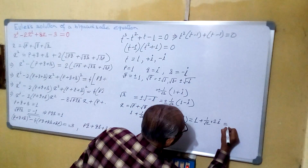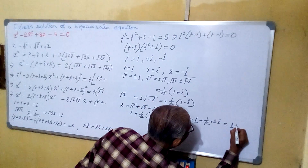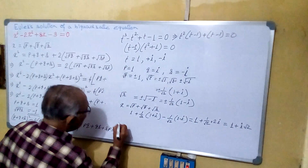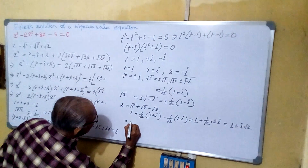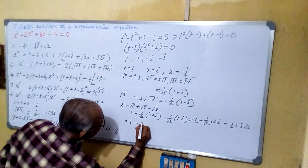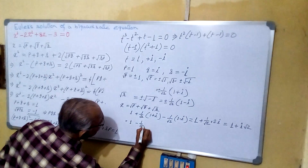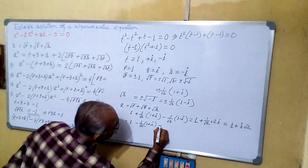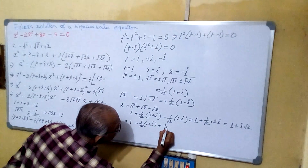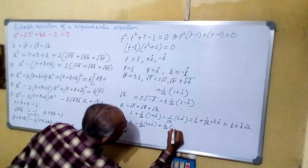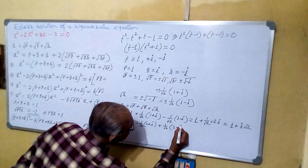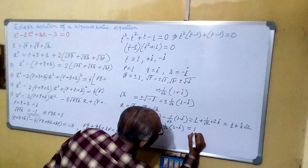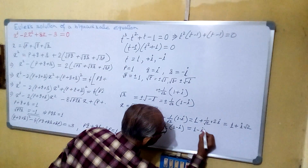That equals to 1 plus i root 2. Now if we take root P equals 1, root Q as minus (1 by root 2)(1 plus i), and root R as plus (1 by root 2)(1 minus i), it comes as 1 minus (1 by root 2)(1 plus i) plus (1 by root 2)(1 minus i), giving 1 minus i root 2.